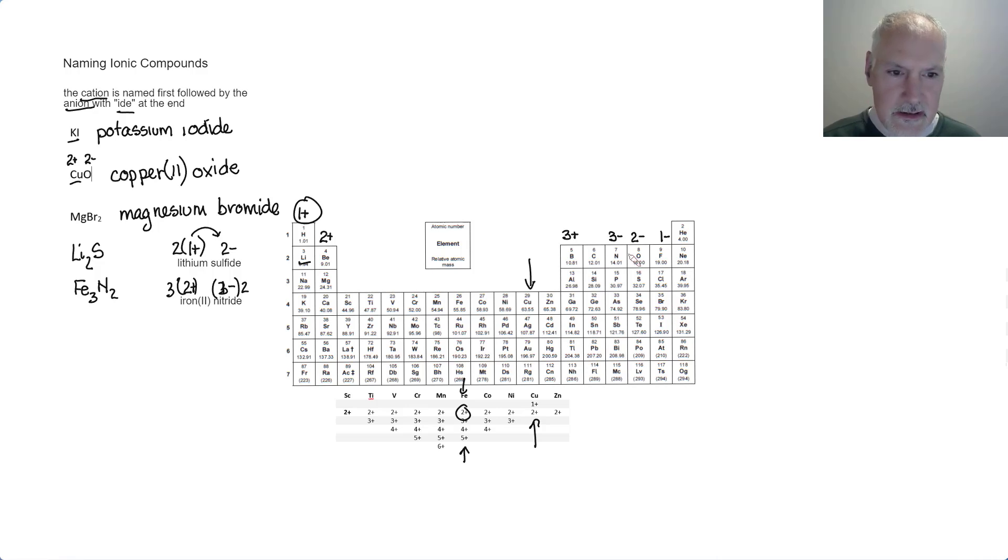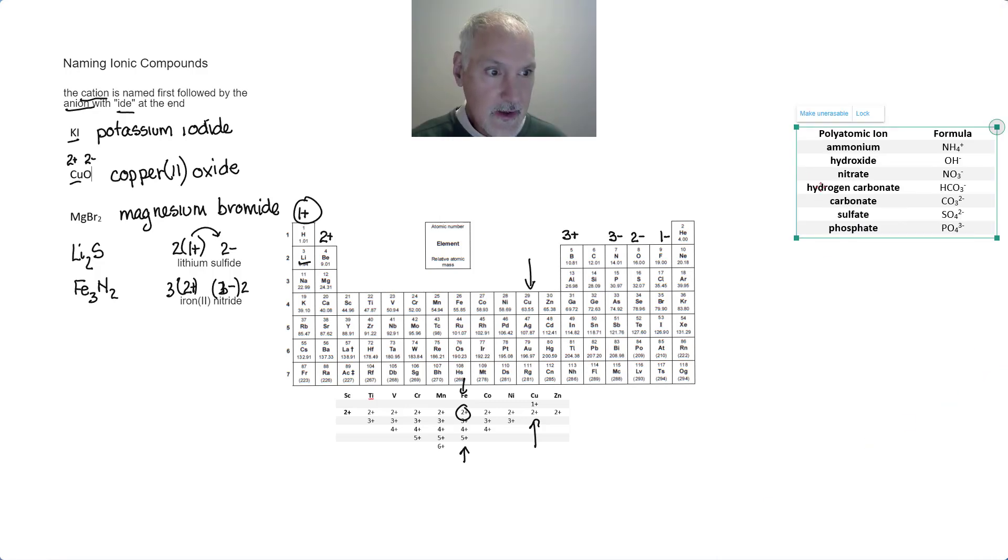Now, not only can atoms gain or lose electrons, but groups of atoms can gain or lose electrons. These are what we call polyatomic ions, groups of elements that can gain or lose electrons. You have here a list of the most common ones that you will need to commit to memory.